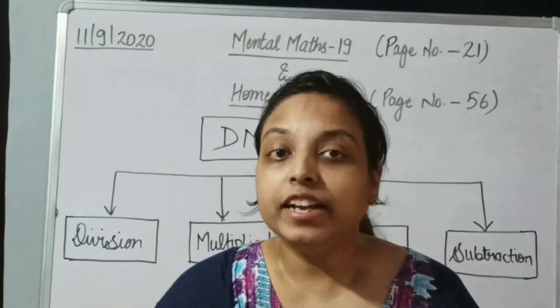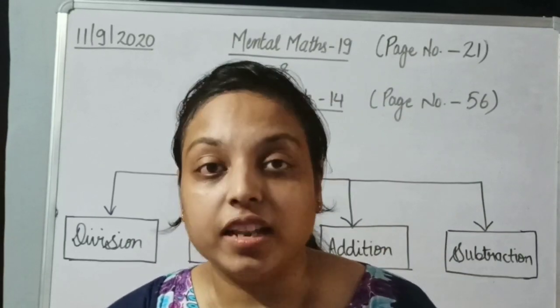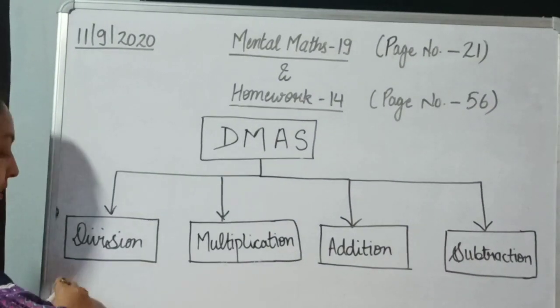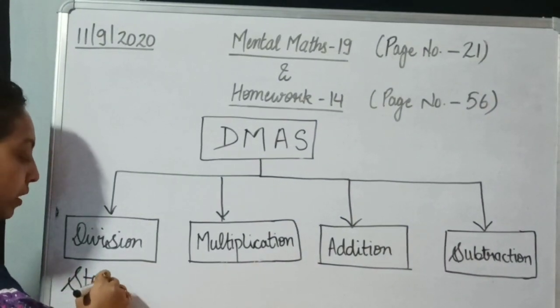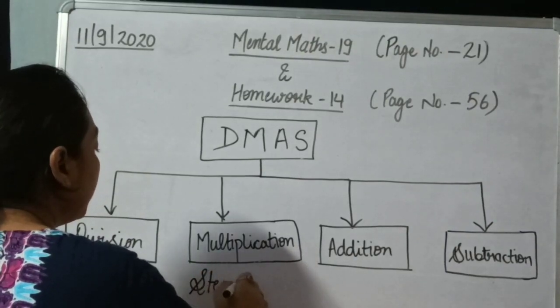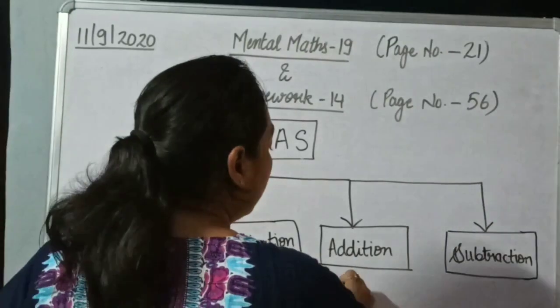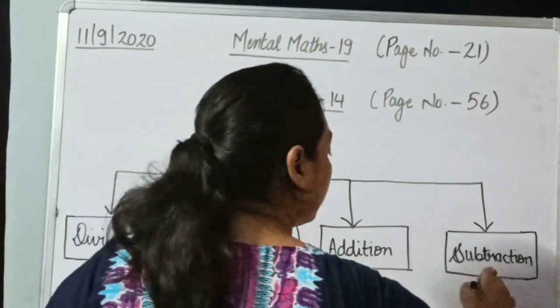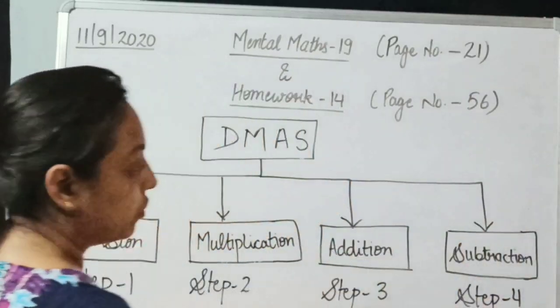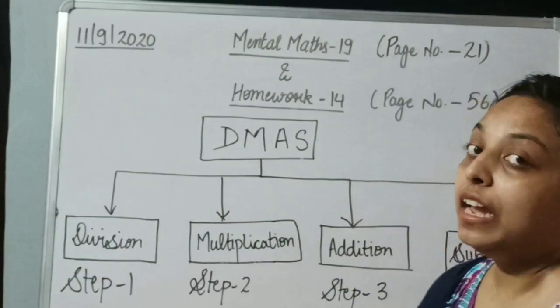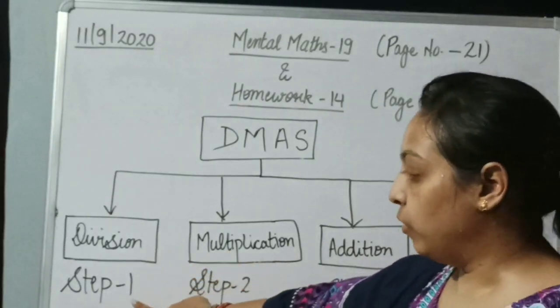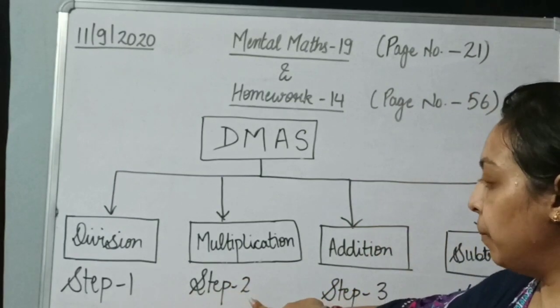It means this method is telling us the sequence to solve the operations when more than two operations are present in one question. The first step is division, step 2 is multiplication, step 3 is addition and step 4 is subtraction. It means if 4 operations are together in the same question, first we will divide, then we will multiply, then add and at last we will subtract.